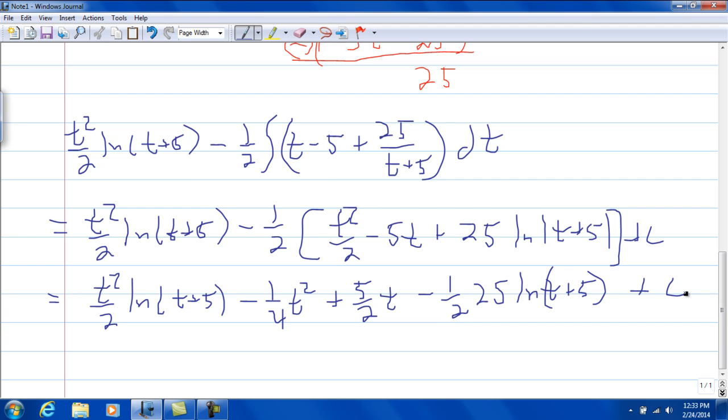To give us t squared over 2, minus, let me do this way instead. I can pull 1 half out, 1 half, natural log of t plus 5 times what? So we've got t squared from the first part, and then that 25 from the last part, minus 25.